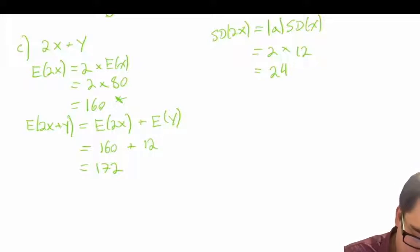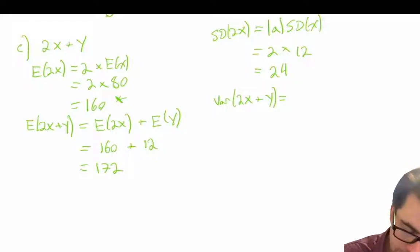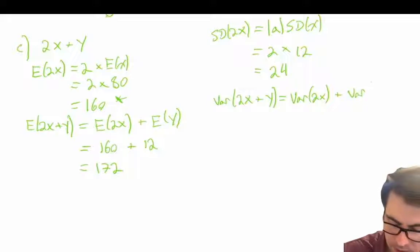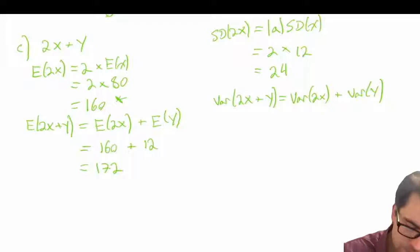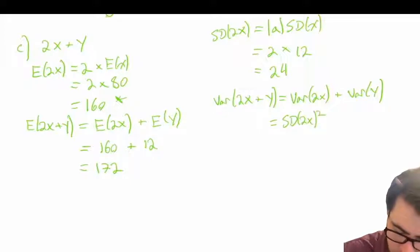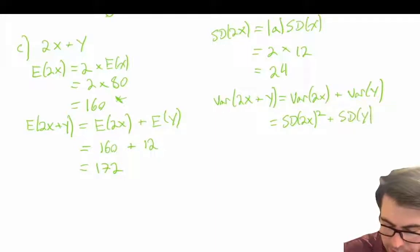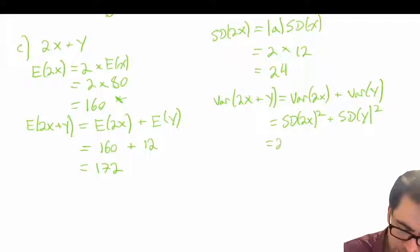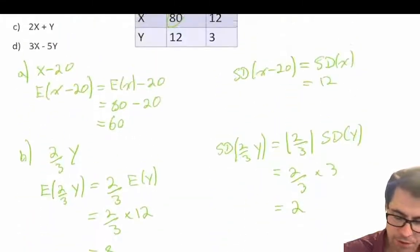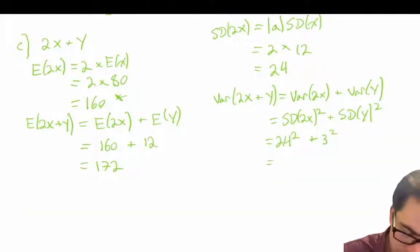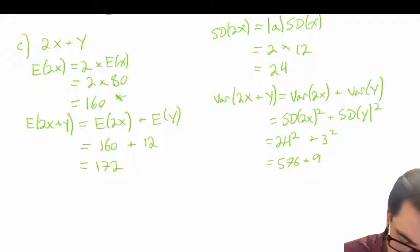We can now solve, but first we need to find the variance of 2X plus Y. The variance of 2X plus Y is equal to the variance of 2X plus the variance of Y, which equals the standard deviation of 2X squared plus the standard deviation of Y squared. The standard deviation of 2X is 24, so 24 squared, plus the standard deviation of Y which is 3 squared — so 576 plus 9 gives us 585.